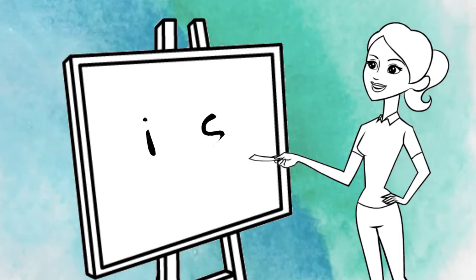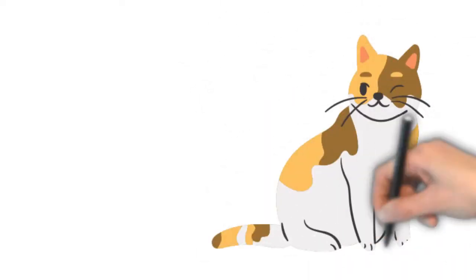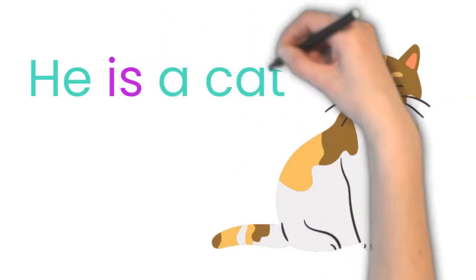On the board I've written two letters we've already learned: the letter I and the letter S. Now your first step is to sound out each letter. I says 'i', S says 's'. Your next step is to squish the two sounds together. So what mystery word did we make if we put I and S together? Yeah, it's the word 'is'. Like he is a cat.